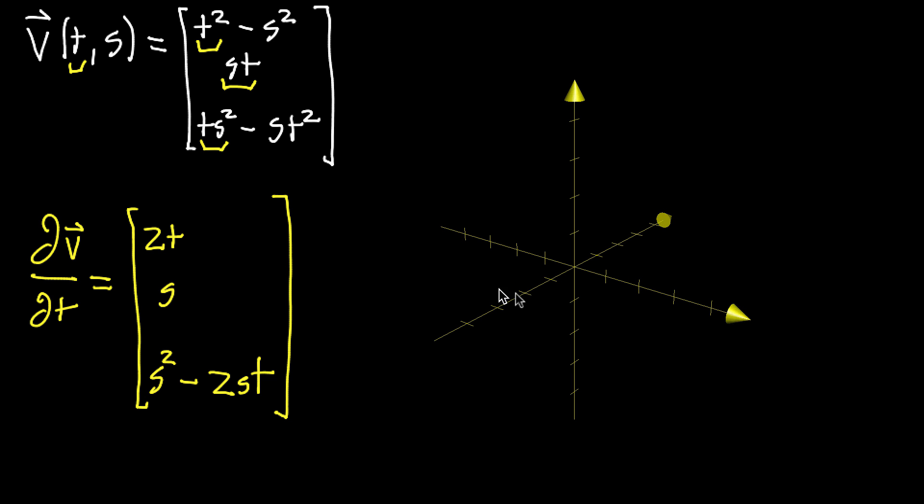We've just computed a vector-valued partial derivative of a vector-valued function, but the question is, what does this mean? What does this jumble of symbols actually mean in a more intuitive geometric setting?